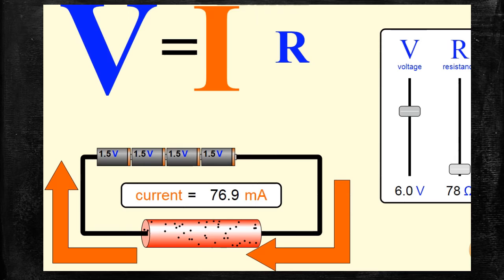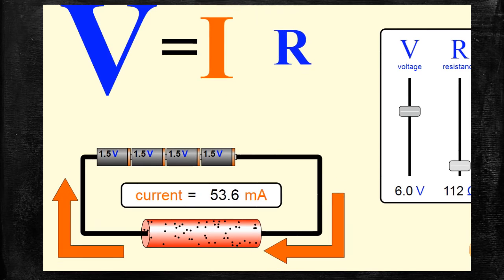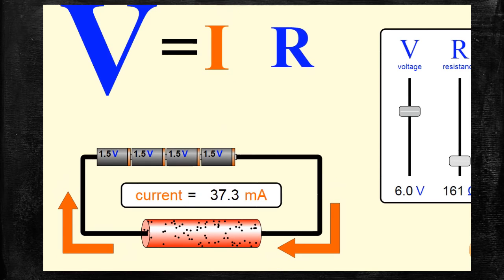Look at the variations. Now I am going to increase the resistance value from 78 Ohm to successive increasing values. Now it is increased from 78 to 161 Ohm. The current value has decreased to 37.3 milliampere. Look at the size of the letter I — it is also decreased.